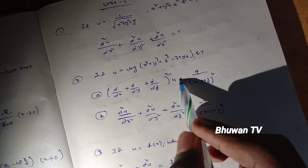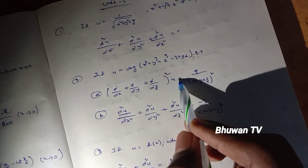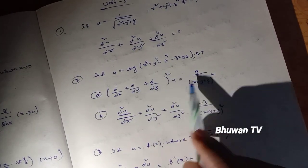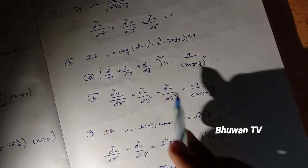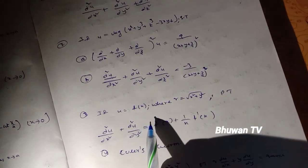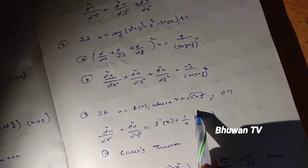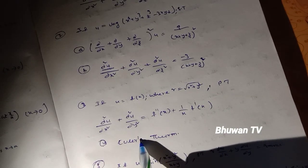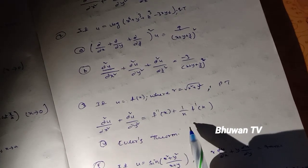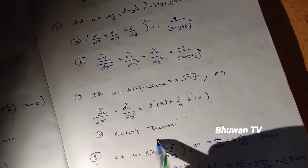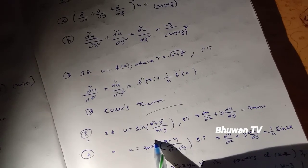Second: if u equals log(x³ plus y³ plus z³ minus 3xyz), show the LHS equals RHS proof. Third: if u equals f(r) where r equals √(x² plus y²), prove that ∂²u/∂x² plus ∂²u/∂y² equals f''(r) plus (1/r) f'(r). Next, Euler's theorem problems.